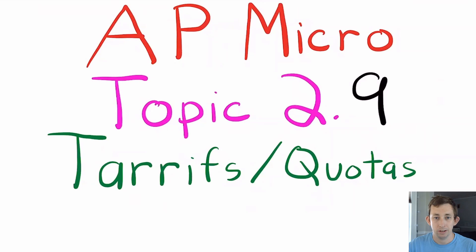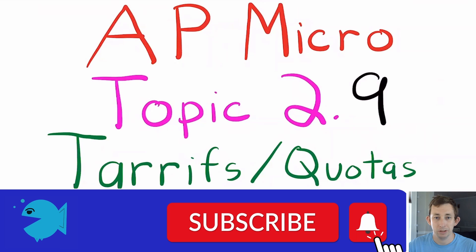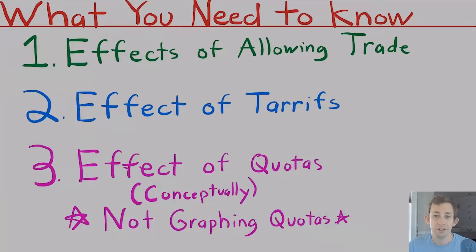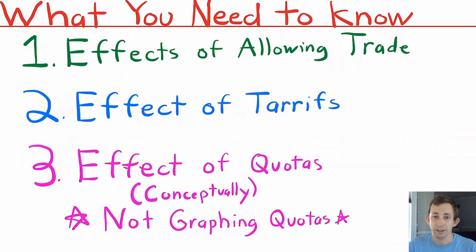Hi guys, welcome back to In Case of Econ Struggles and welcome to another AP Micro struggle. Today we're talking about 2.9, which is about tariffs and quotas. Here are the things that you need to know about tariffs and quotas. First, we're going to talk about the effects on a market of allowing international trade, then we're going to talk about the effects of tariffs.